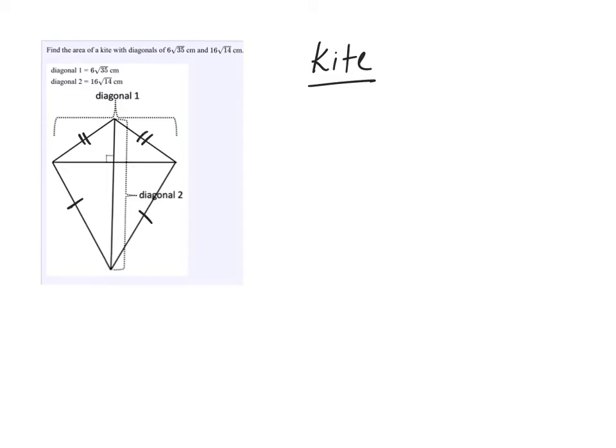Now just like a rhombus, the diagonals are perpendicular, and in fact, the formula is exactly the same as that of a rhombus.